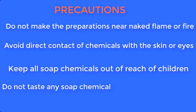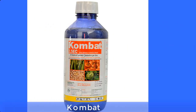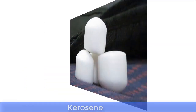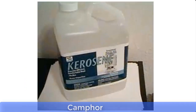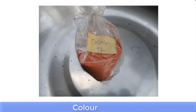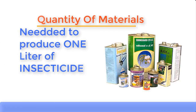Now let's go through the list of materials needed for this production. Number one is compact, number two is eucalyptus oil, number three is camphor, number four is kerosene, number five is isopropyl alcohol also known as IPA, and number six is color. Please note that the solvent used for this preparation is kerosene.